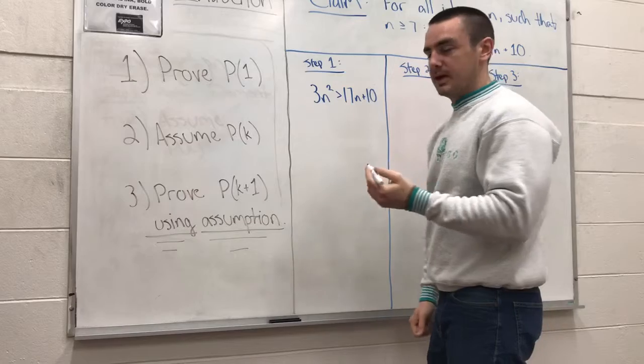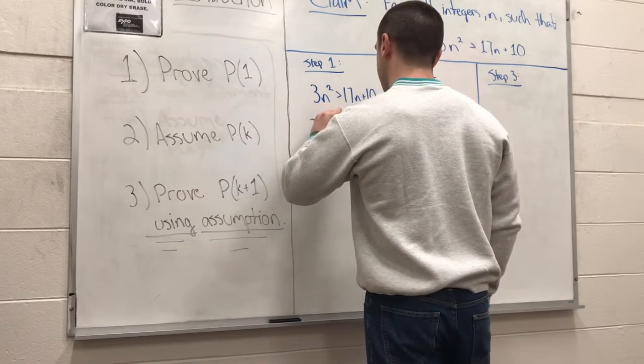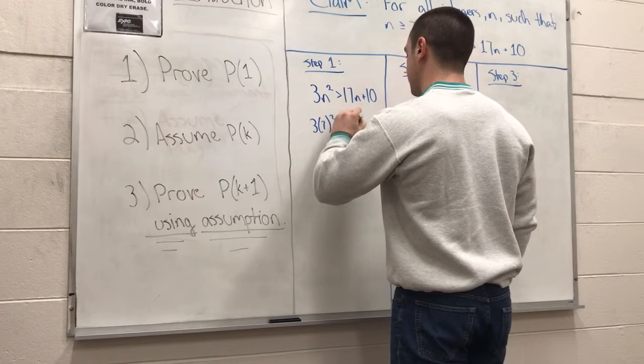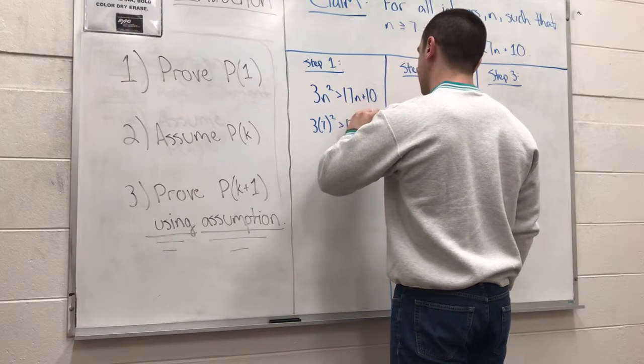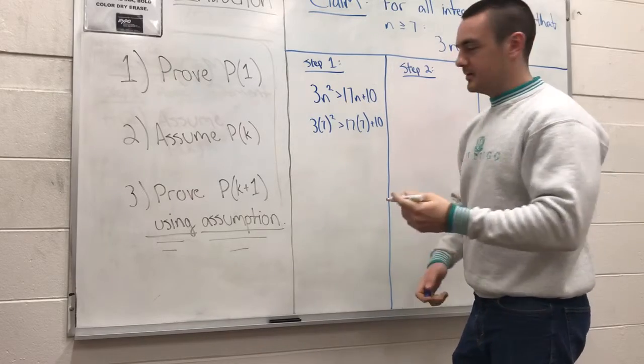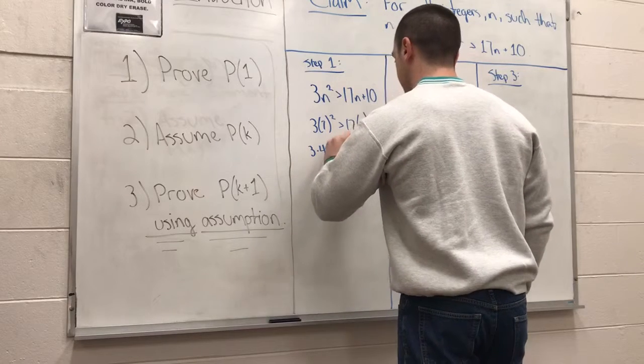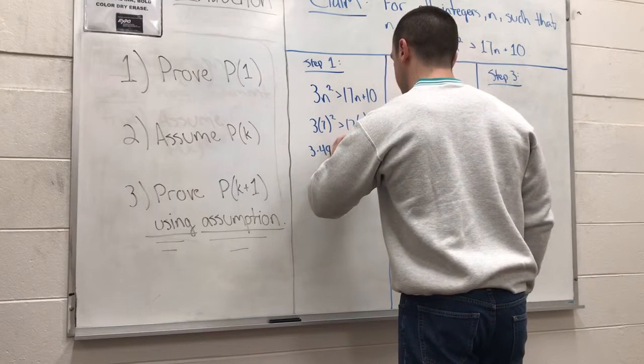Now let's just plug in 7 where we have n. So 3 times 7 squared is greater than 17 times 7 plus 10. We do a bit of math, and we can see that this equals 3 times 49 is greater than 119, which is 17 times 7 plus 10.